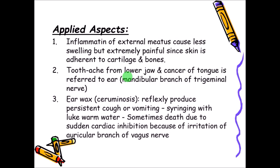The third important applied aspect is earwax. Earwax usually comes out automatically, but sometimes it accumulates and the doctor will flush it out. During flushing, it can reflexly produce persistent cough or vomiting. Even the presence of earwax itself can produce cough and vomiting. So in the case of children with persistent cough and vomiting, the doctor will examine the ear to check for wax accumulation.